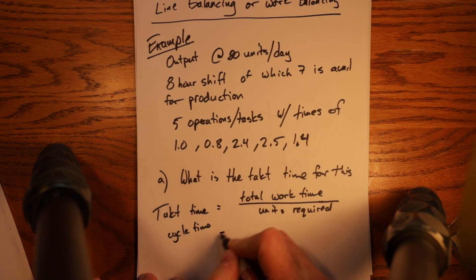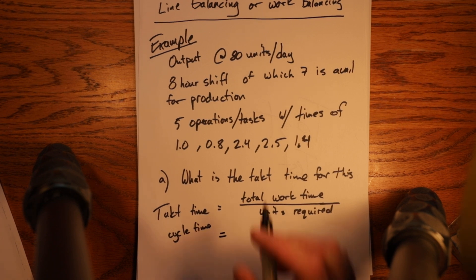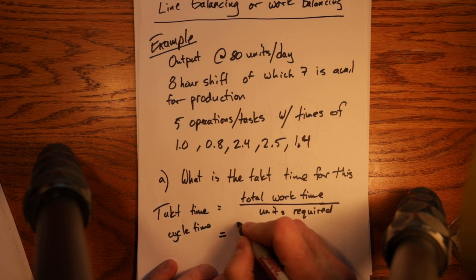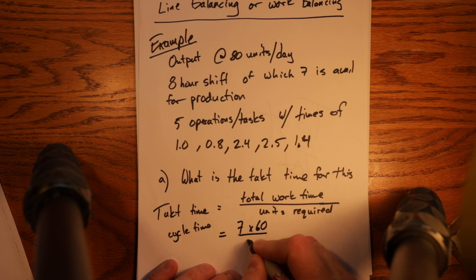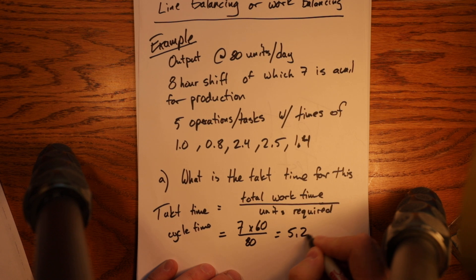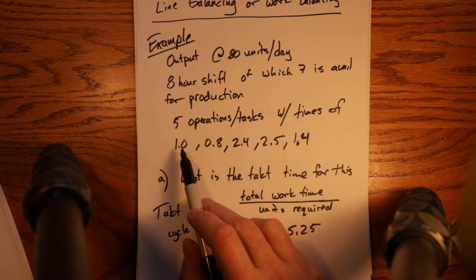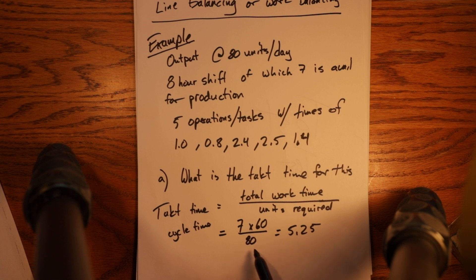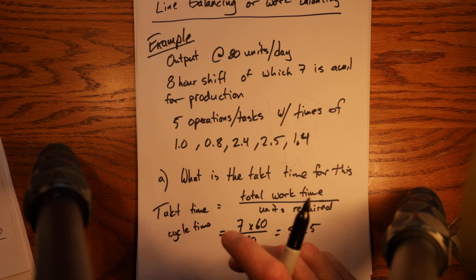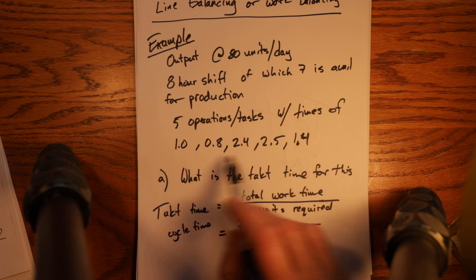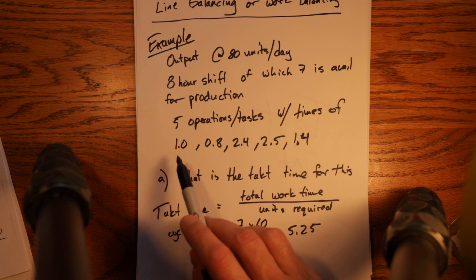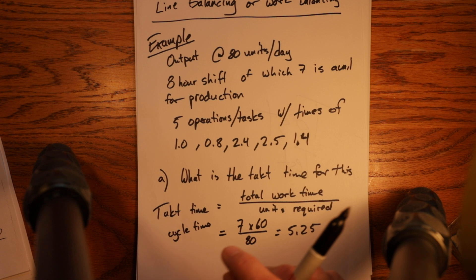So we have 80 units per day and we have 7 productive hours. So the tact time is equal to 7 hours times 60 minutes divided by 80 units equals 5.25. That means every five and a quarter minutes we have to have a unit of production or we won't meet our objectives.